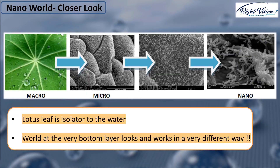Those images were just at the micrometer scale. Let's go through some other examples. What about the surface of a leaf, like the waterproof lettuce leaf? Here we see it at the macro, then micro, and then nanoscale. At the nanoscale, it looks more like a bunch of worms than a soft leaf surface.